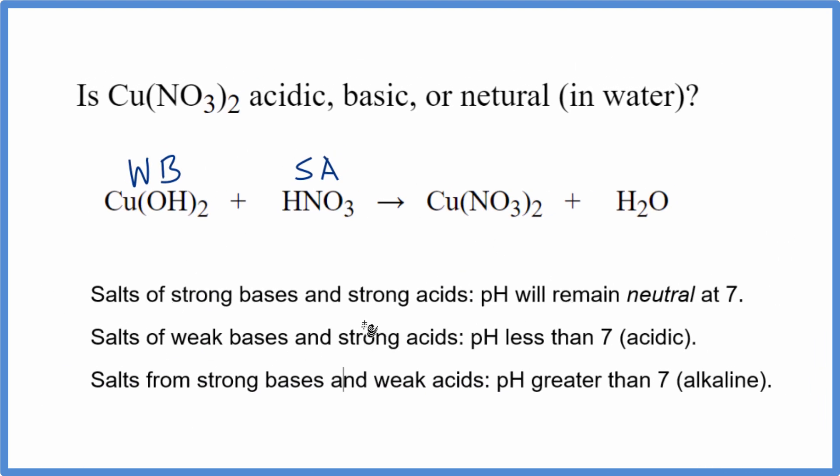So now we can use the rules. We're looking for a weak base. Here's a weak base plus a strong acid. That'll give us a pH less than 7. That'll be acidic. According to our rules, when we react copper 2 hydroxide plus nitric acid, we'll end up with copper 2 nitrate in water, which will be acidic.